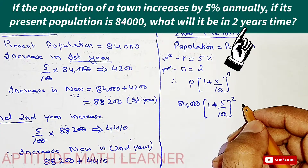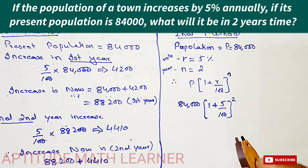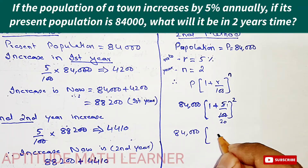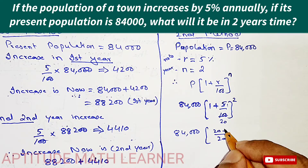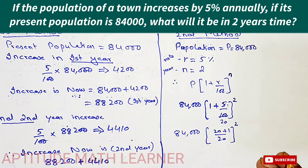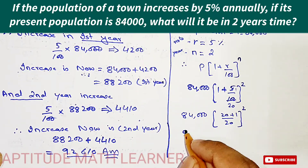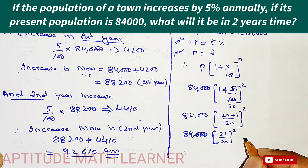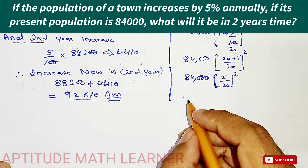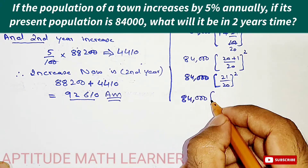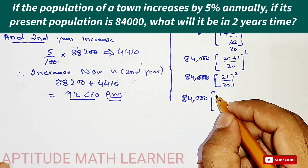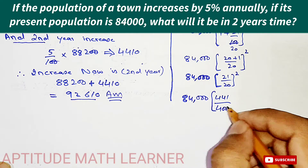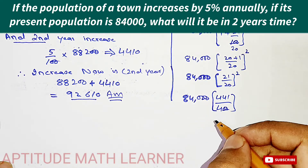Simplifying 5/100 to 1/20 and taking the LCM of 20: this becomes 84,000 times (21/20) to the power 2. Further, 21 times 21 is 441 and 20 times 20 is 400, so we have 84,000 times 441 over 400. Cancelling the zeros, we get 210 times 441.